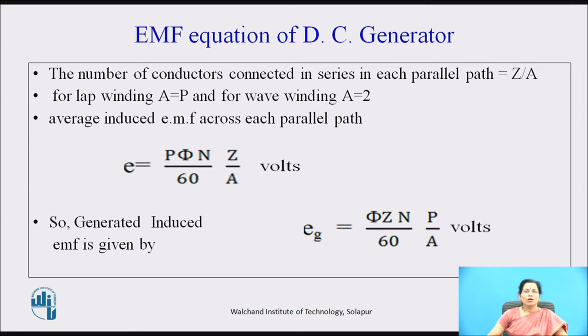Since Z, 60, P, and A are all constant terms, the generated induced EMF is proportional to phi and the speed.